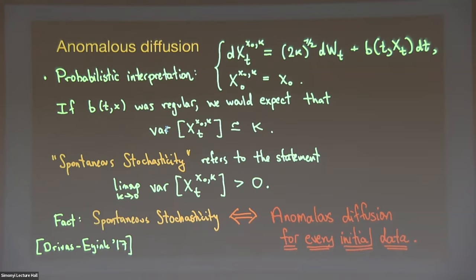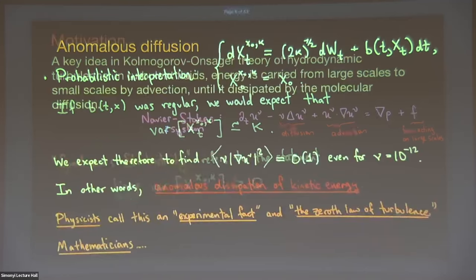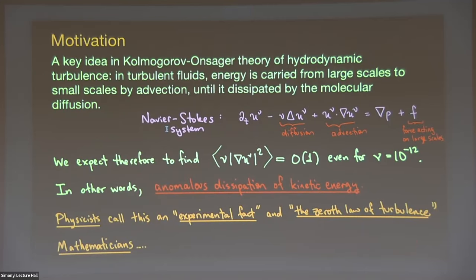This is also sometimes called spontaneous stochasticity — the idea that as you send kappa to zero, the infinitesimal kappa that remains is a germ that sparks some stochasticity to appear in your system from nowhere. There's a paper by Drivas-Eyink that proves these two pictures are equivalent: to have spontaneous stochasticity you must have anomalous diffusion for every initial data.